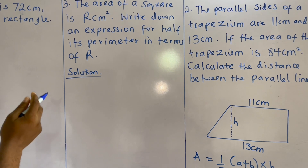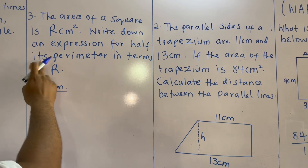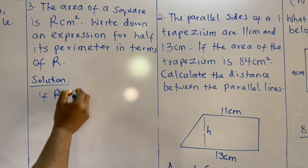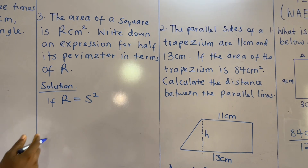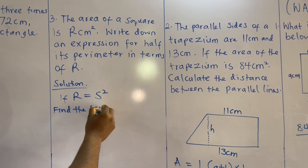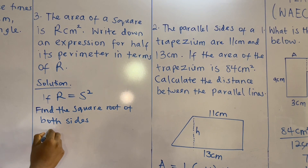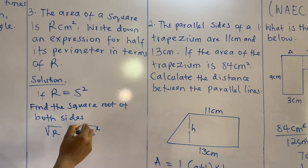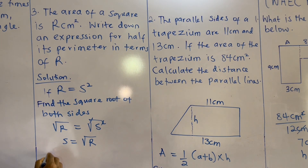For the next example: the area of a square is r centimeters squared — write down an expression for half its perimeter in terms of r. Since area equals s squared, we have r equals s squared. Taking the square root of both sides, s equals the square root of r.